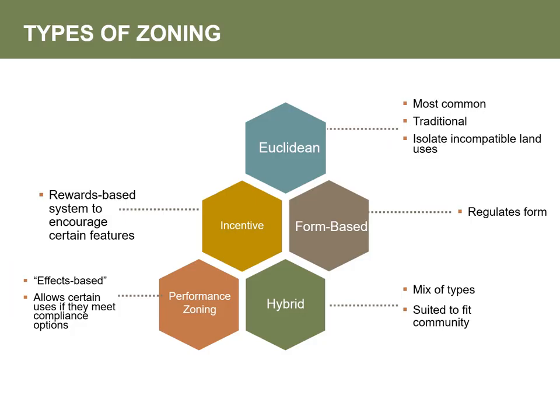Traditional Euclidean zoning regulates and separates development by land use, with zoning districts for categories and subcategories of residential, commercial, office, industrial, and sometimes other uses. Traditional zoning issues include: one, it contributes to sprawl and auto use; two, it results in development that can lack a sense of place, since zoning district classifications are typically citywide and don't account for differences in neighborhoods; three, inability to mix uses that could coexist; four, it can be an impediment to realizing plan visions for revitalizing neighborhoods and downtowns; and five, it is separate from other policies and regulations like street classifications that affect public space and community character.